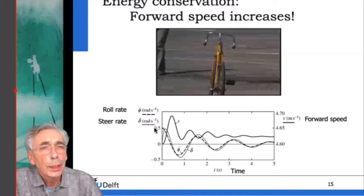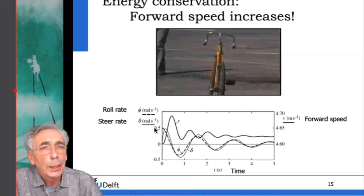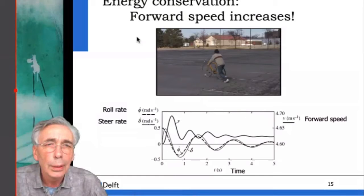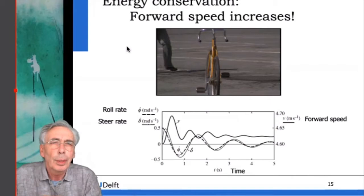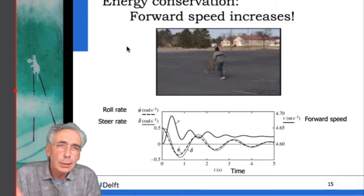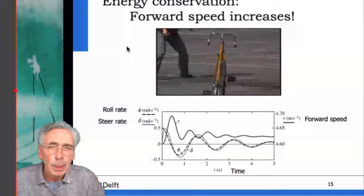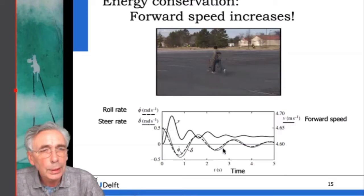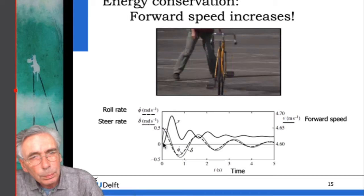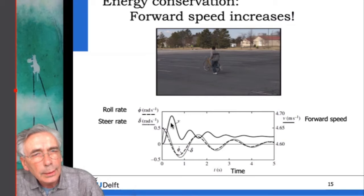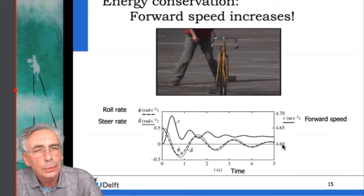At unstable speed, a simulation shows the bike being hit sideways, oscillating, and falling over — exactly what happens when you learn to ride at low speed. At stable forward speed, the same lateral push causes oscillations that die out and the bike comes back up. As for where the energy goes in the energy-conservative system: in a second-order nonlinear sense, the energy from lateral motions is transferred to the forward motion. You can see the oscillation of lean and steer die out while the forward speed increases slightly and settles at a higher value.